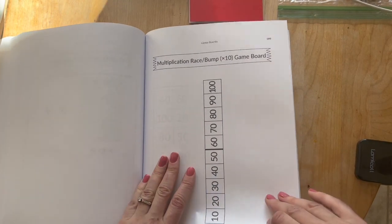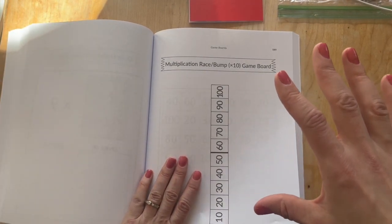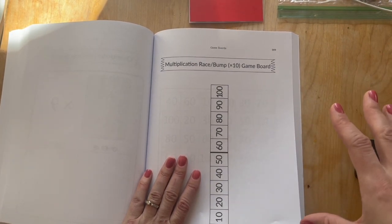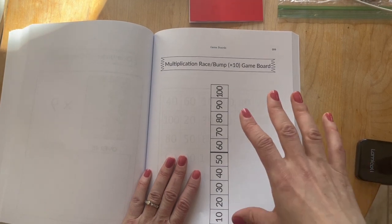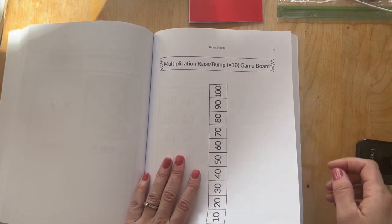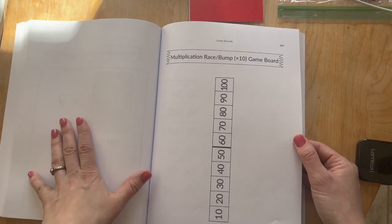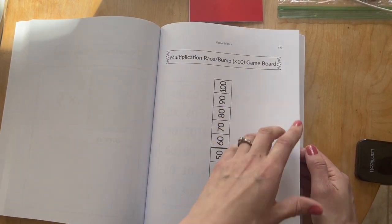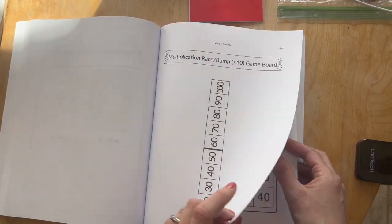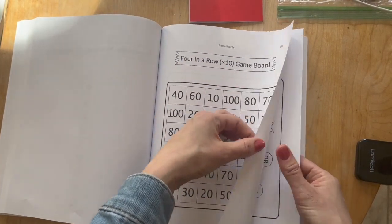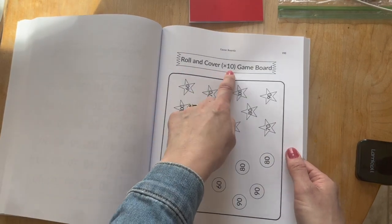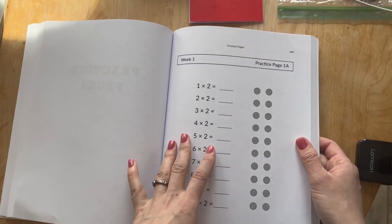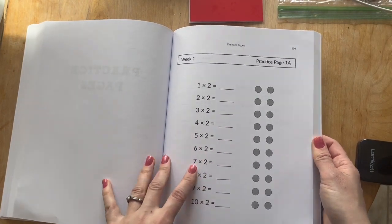So you see that every single week you have the same type of game on day one, same type of game on day two, three, four, and five, but they work on a different math fact. So I think you saw that with the flip through. And just as a kind of reminder, here you have multiplication race, bump with the times 10 tables, four in a row with the times 10 tables, then roll and cover, then over under. So every single day, each day of the week, they'll have a practice page.